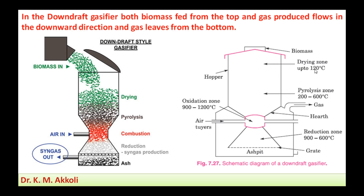The drying zone has a temperature up to 120 degrees Celsius. The pyrolysis zone has a temperature range between 200 to 600 degrees Celsius. The oxidation zone has a temperature of 900 to 1200 degrees Celsius, and the reduction zone has a temperature of 900 to 600 degrees Celsius.